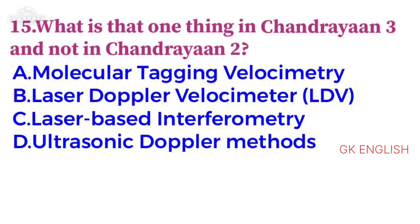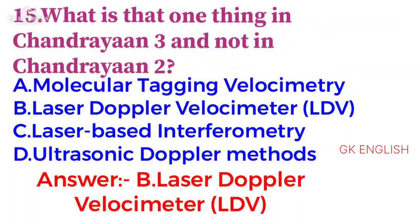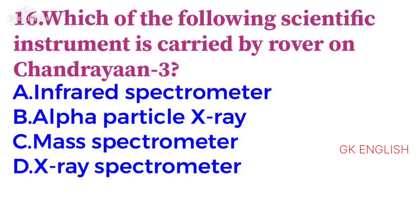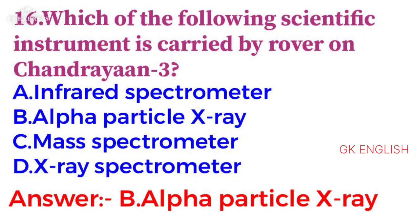The fifteenth question: What is one thing present in Chandrayaan-3 but not in Chandrayaan-2? Answer B: Laser Doppler Velocimeter. Which of the following scientific instruments is carried by the rover on Chandrayaan-3? Answer B: Alpha Particle X-ray Spectrometer.